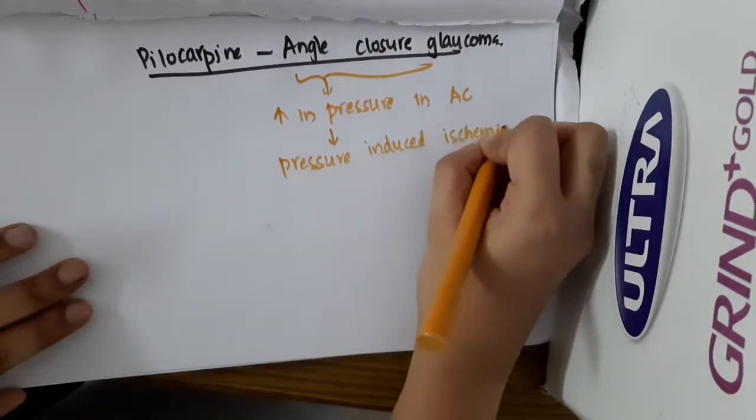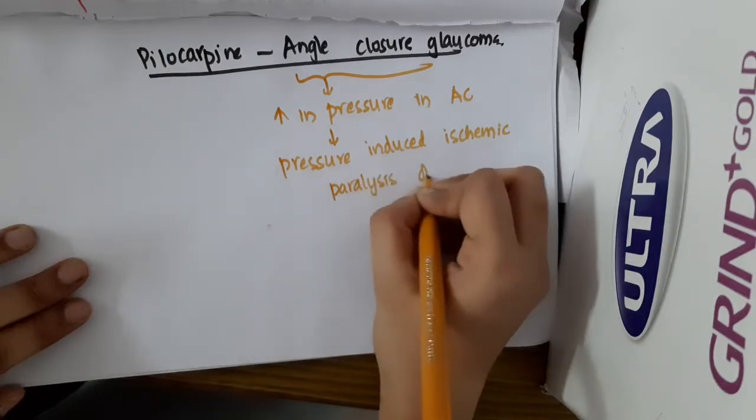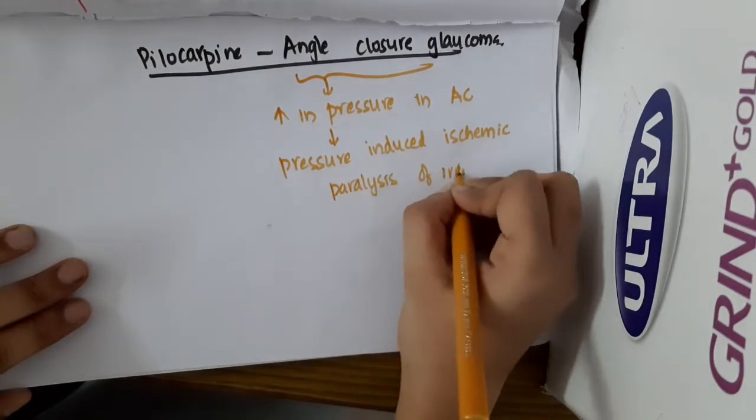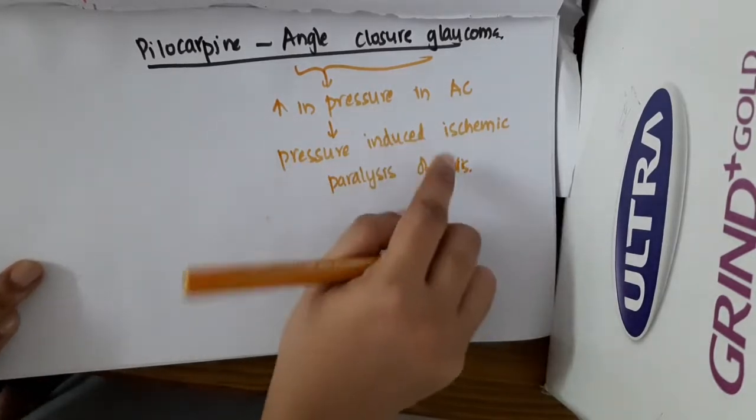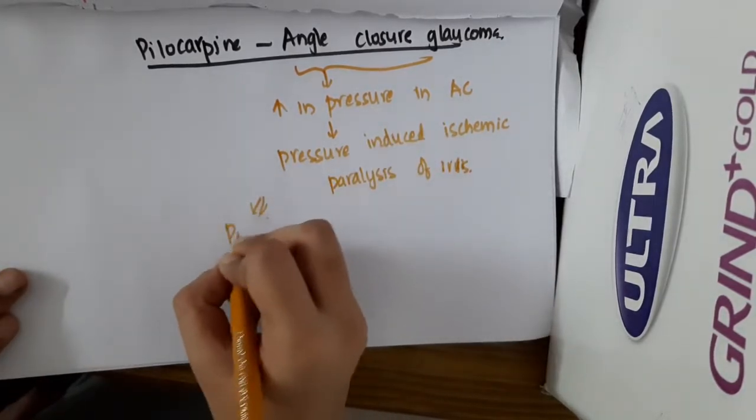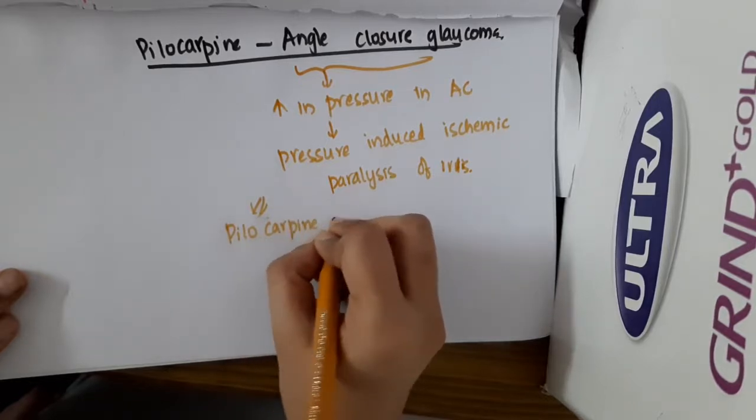Because it causes pressure-induced ischemic paralysis of the iris, pilocarpine is ineffective.